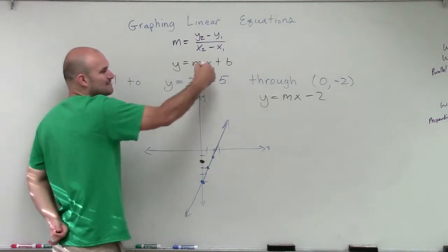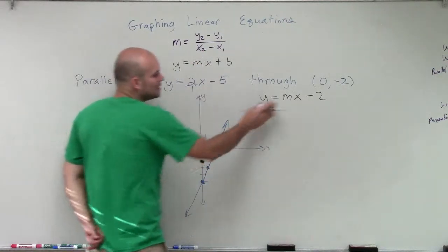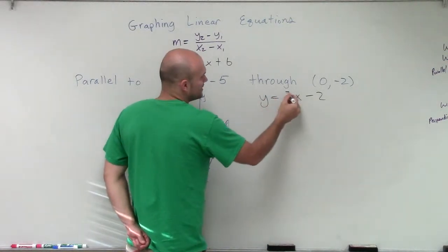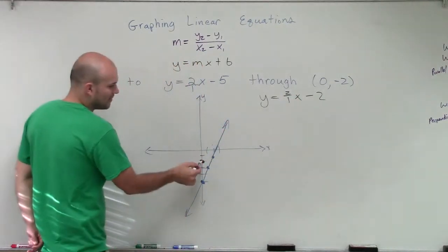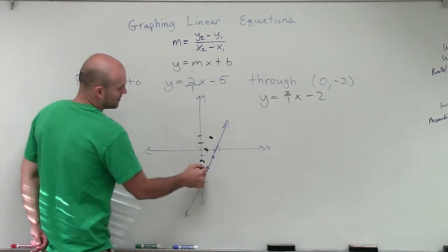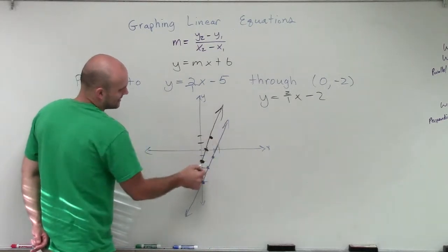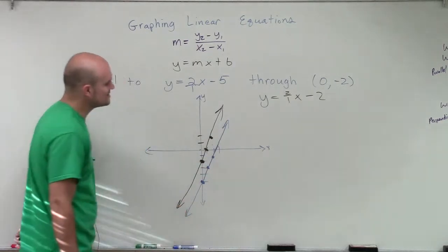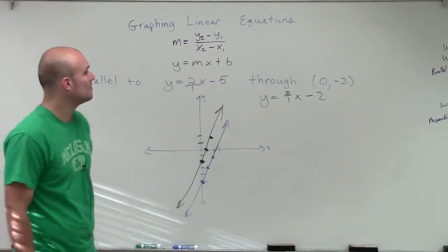Well, since my graph has to be parallel to this line, I know that the slope has to be 2 over 1. So from this point, I'm going to go up 2 over 1, up 2 over 1. And I can continue that pattern. You can see that's how I'm going to graph my parallel line.